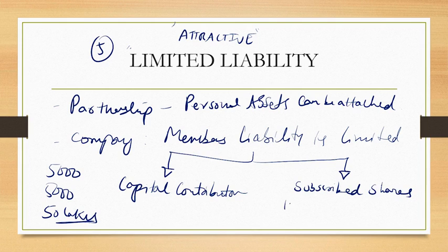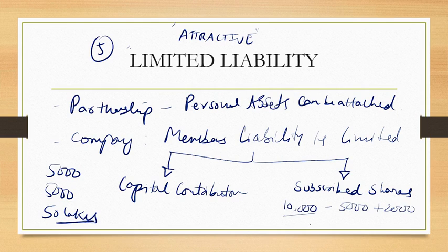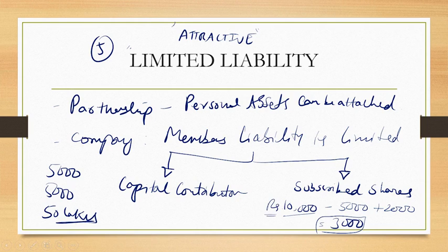For example, if shares worth rupees 10,000 are subscribed but you have paid only 5,000, and then 2,000 more — totaling 7,000 paid — your maximum liability now is only 3,000 rupees, because you subscribed to shares worth rupees 10,000. This is the biggest advantage in a company.